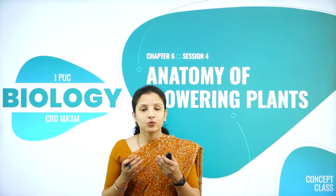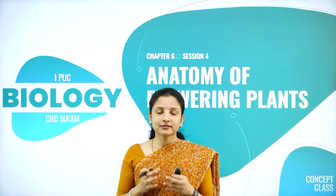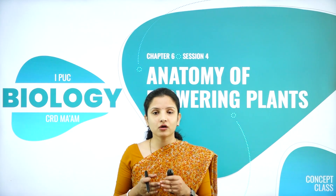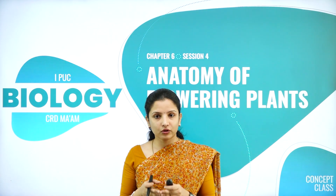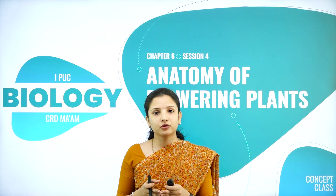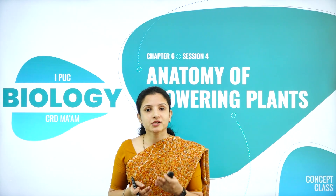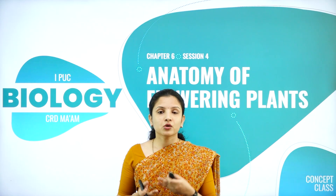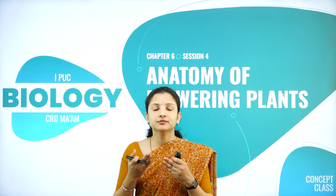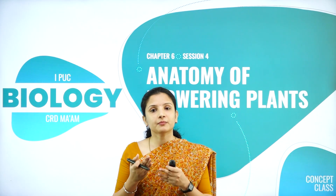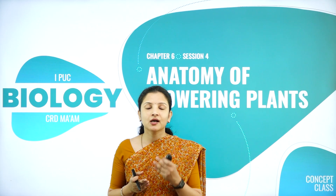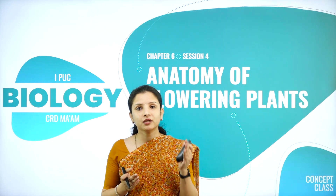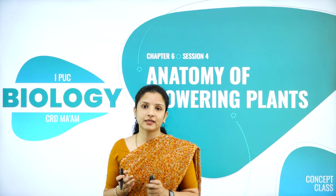In today's session, we shall study in detail how the cells are arranged inside a plant body, be it a dicot or monocot stem, dicot or monocot root, and dicot and monocot leaf. Specifically, we shall study about the dicotyledonous root and the monocotyledonous root — how cells look in a transverse section under the microscope and how you can differentiate between a dicot root and a monocot root.